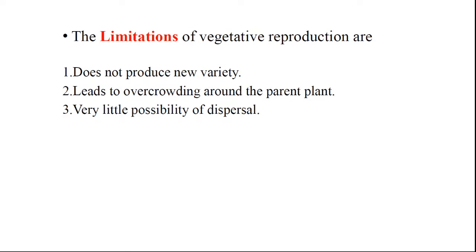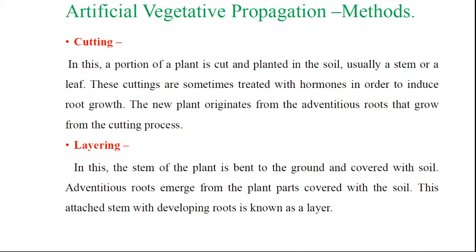There are a few limitations. First, it does not produce new varieties, because by vegetative propagation we cannot develop new varieties. Second, it leads to overcrowding around the parent plant. Third, there is very little possibility of dispersal — the dispersal mechanism is totally less with vegetative methods of plant propagation. These are the three disadvantages or limitations of vegetative propagation.